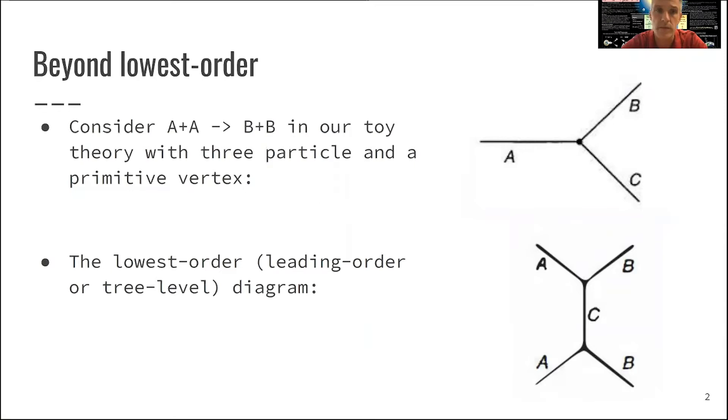And then we can use this primitive vertex in order to build up scattering processes. And here, we want to consider the process of two particles A going to two particles B. And they do this by exchanging particle C. This is the lowest order diagram, or sometimes called the leading order, or sometimes called tree-level diagram.